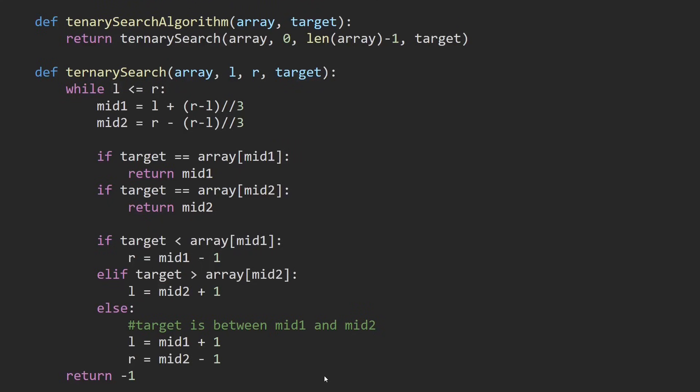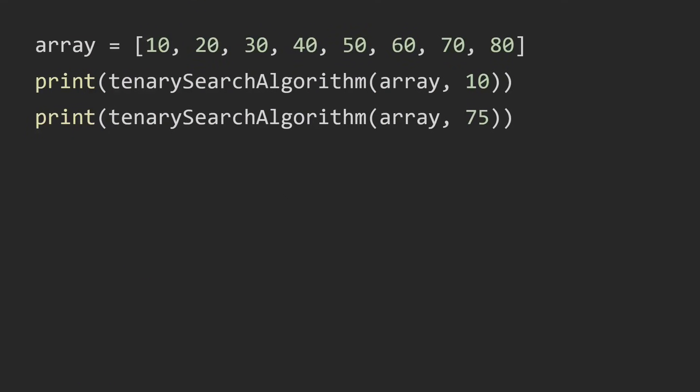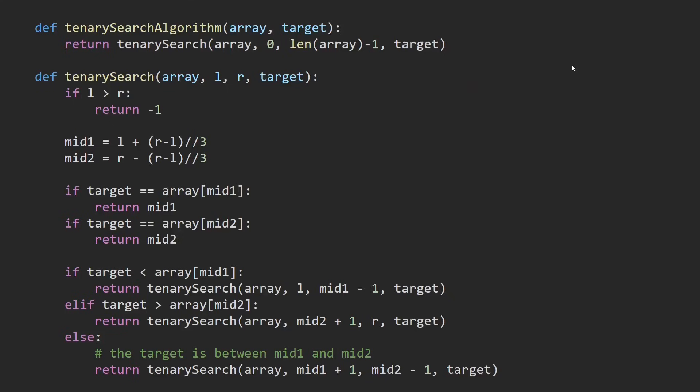And after the while loop, r is to the left of l. So we return minus 1. Here are the test cases. And this is the ternary search recursive function, but it basically does the same thing.